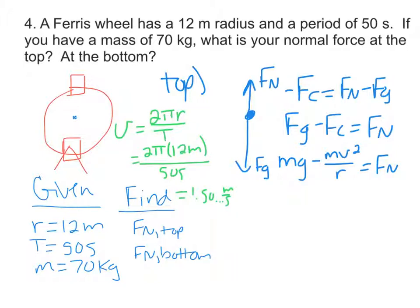Going back to solving for normal force over here. Our mass, 70 kilograms times g, 9.8 newtons per kilogram minus 70 kilograms times my unrounded number, 1.5 keeps on going meters per second squared over 12 meters. I'm out of room, equals Fn. I'll write it over here.